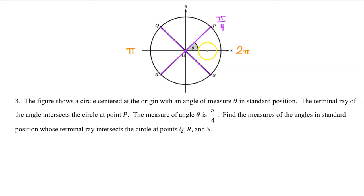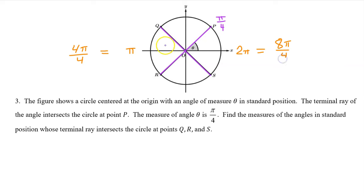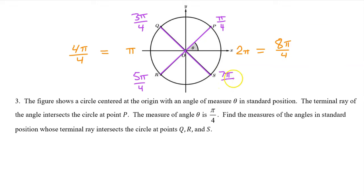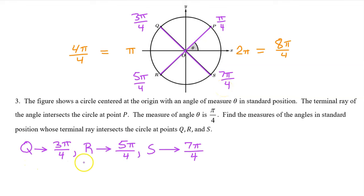At this point we have memorized that halfway around is pi radians and all the way around is 2pi radians. But since we are looking for multiples of pi over 4, the key is to think of pi as 4pi over 4 and to think of 2pi as 8pi over 4. The angle at Q is one multiple before 4pi over 4, thus 3pi over 4. The angle at R is one multiple after 4pi over 4, so that's 5pi over 4. And the angle at S is one multiple before 8pi over 4 — that is 7pi over 4.